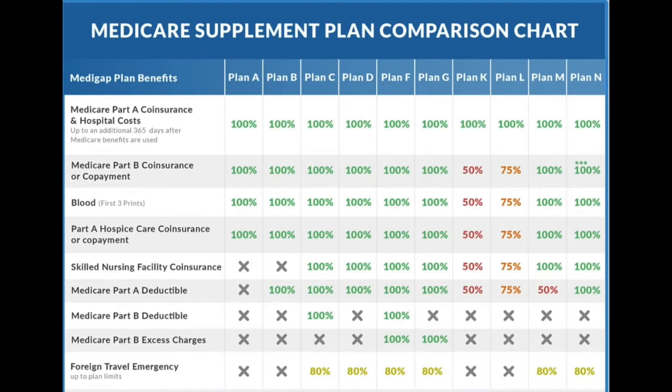The most popular plans on the chart are Plan G and Plan N. Plan G is the most popular and most comprehensive Medigap plan — it covers a plethora of needs. You can pretty much pick it and be done. With Plan G you're covered for doctor's visits, emergency room visits, and hospital stays, though you do have to meet your deductible.